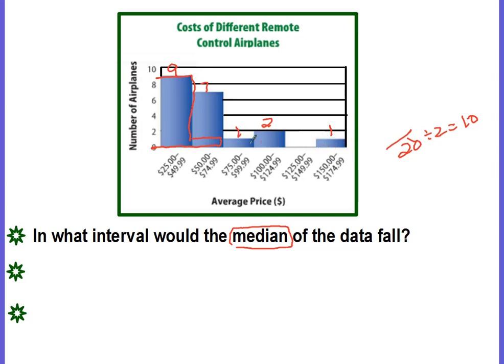Which would be three plus one is four. Come up here, the six, make 10. So you could see that the middle of the data is going to fall between these two. And which column is that? Which interval is that? That's the $50 to $74.99.